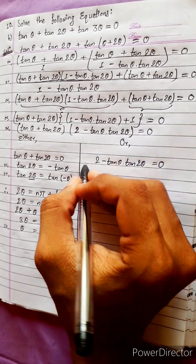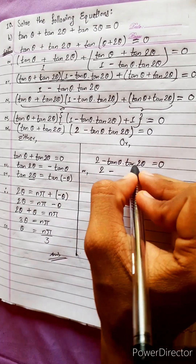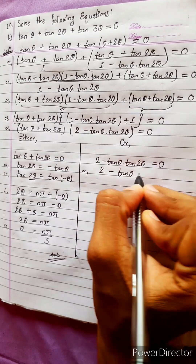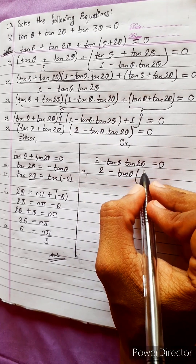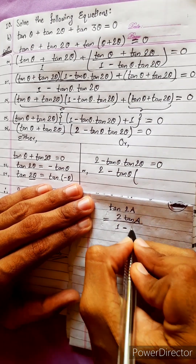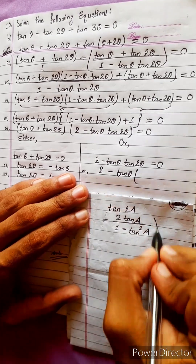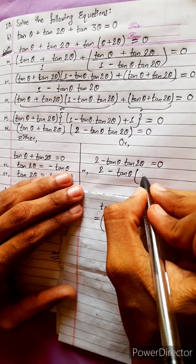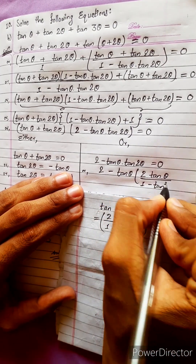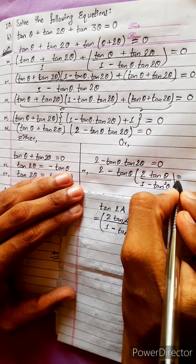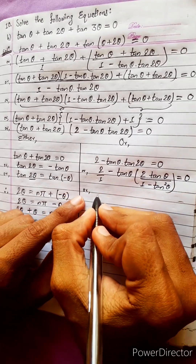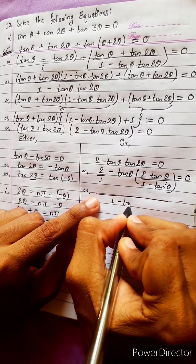For the second case, we have tan θ and tan 2θ, and we need to express everything in terms of θ. Use the formula tan 2a = 2 tan a / (1 − tan² a). Apply this formula here, substituting tan 2θ = 2 tan θ / (1 − tan² θ), giving the expression with denominator 1 − tan² θ equal to zero.